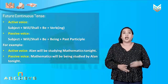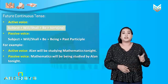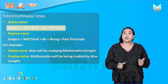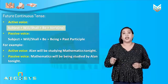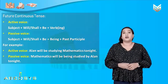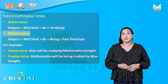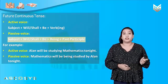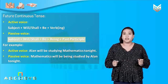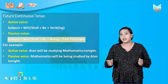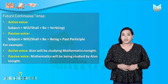Next, future continuous tense. How do we write a sentence in the active voice? We will take a subject, add 'will' or 'shall' to it, then add 'be' and a verb having '-ing'. In the passive voice, we will take a subject, add 'will' or 'shall', then 'be', then 'being', and then past participle.